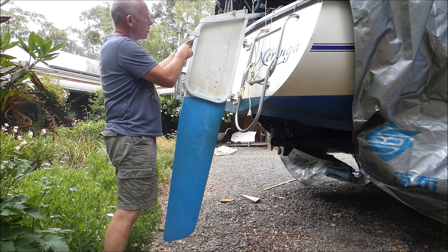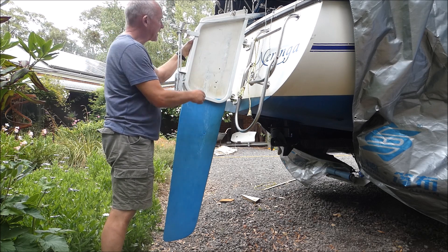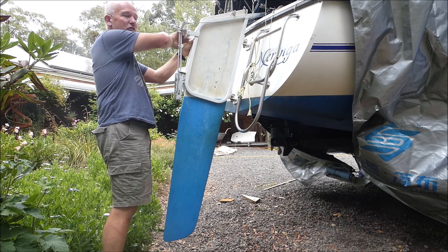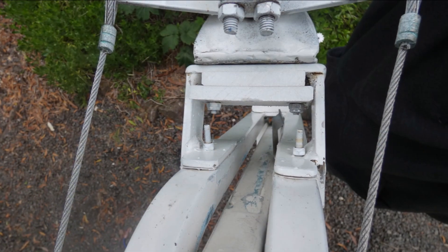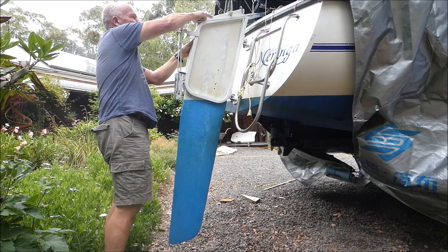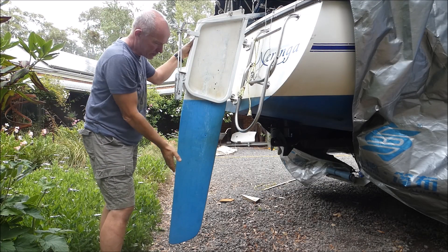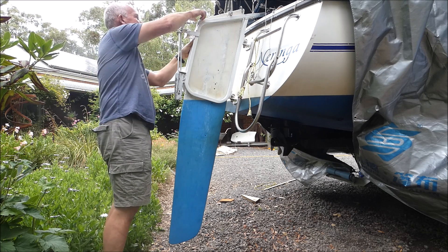And once you've cut out the tab at the bottom, you have to make a bracket that allows the rudder to move back about 50 to 75 millimetres. So when you rotate it back at the top, you'll notice the bottom of the rudder then rotates forward.